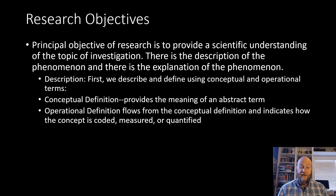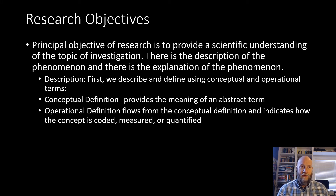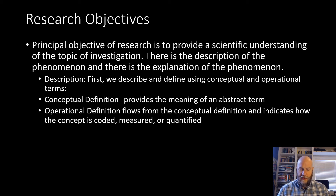One way to try and control for this is to be a good student of the existing literature — to go into existing studies, journal articles, and books on the subject and look at what other researchers have done. You may not agree with them a hundred percent and take their definition whole cloth, but you're certainly going to be informed by the people that have gone before you in the research process.